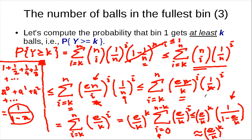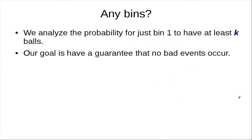Finally, we have that the probability that bin 1 gets at least k balls is approximately (e/k)^k. We approximated by dropping a term that is larger than 1, so this is an approximate upper bound.